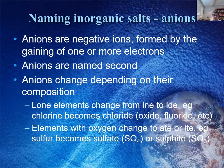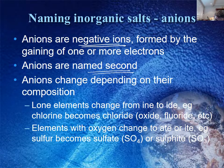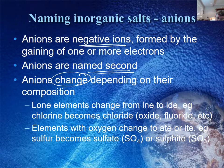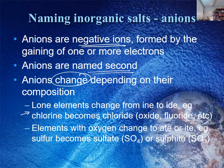The second part of the name is the anion. Anions are the negative ions, formed by the gaining of one or more electrons. They are always named second, and their names will change. If the element is alone, it changes from an INE to an IDE ending. So chlorine becomes chloride, fluorine becomes fluoride, iodine becomes iodide, and oxygen becomes oxide — a slight change, but the same basic rule.